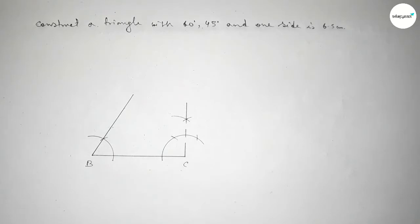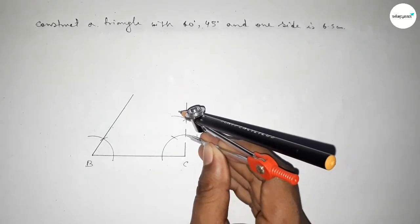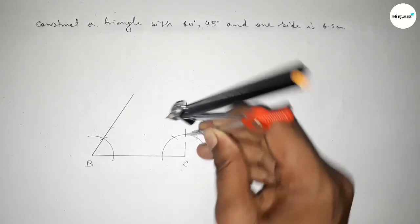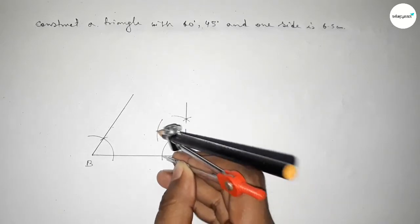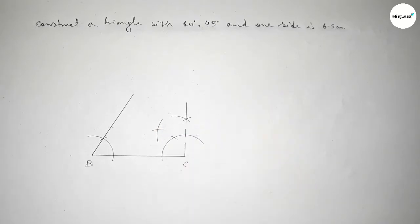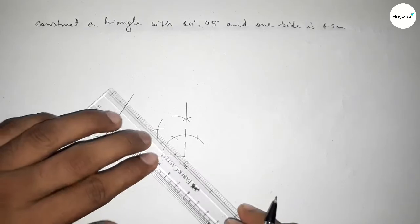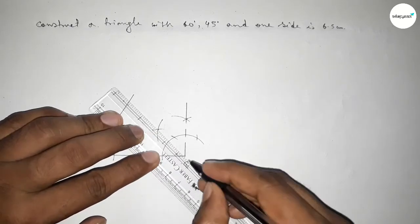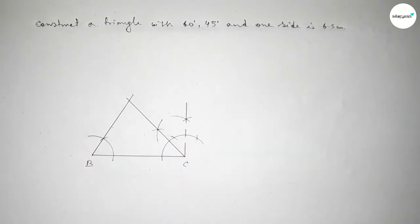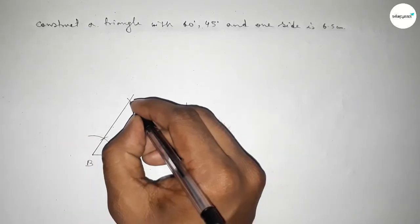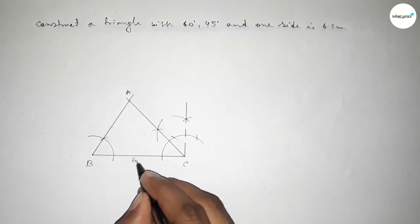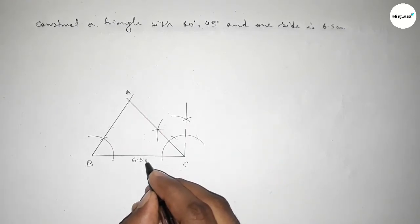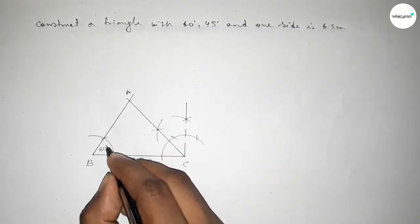Now bisecting this 90 degree angle to get 45 degrees. Putting the compass here, taking any length, drawing an arc, and cutting here. Both curves intersect at a point. Joining this gives 45 degrees. Both lines intersect at point A, with side 6.5 centimeters, angle 60 degrees, and angle 45 degrees.